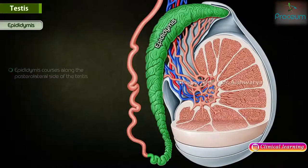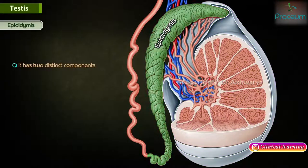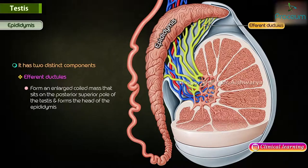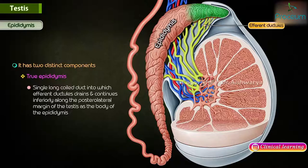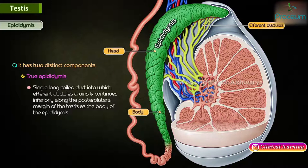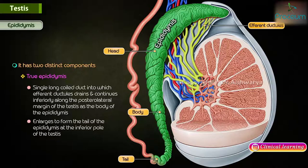Epididymis. The epididymis courses along the posterolateral side of the testis and has two distinct components: efferent ductules, which form an enlarged coiled mass that sits on the posterior superior pole of the testis and forms the head of the epididymis, and true epididymis, which is a single long coiled duct into which the efferent ductules all drain, continuing inferiorly along the posterolateral margin as the body and enlarging to form the tail at the inferior pole.